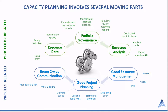This diagram highlights how capacity planning involves several moving parts. It begins with good project planning. It requires a project team to define the scope of their work, to define the tasks required to get the work done, or even a work breakdown structure. It requires estimating the duration of the work and then the relative effort needed. This is the foundation of resource management. At the portfolio level, we need a way of aggregating this, making it as easy as possible for leaders to review and make decisions.